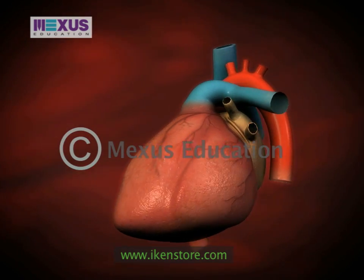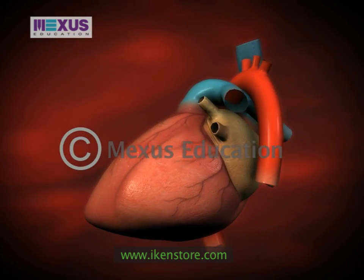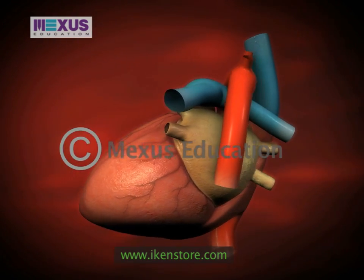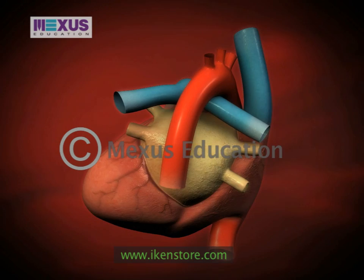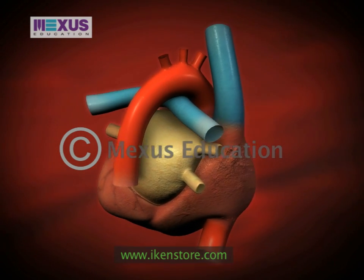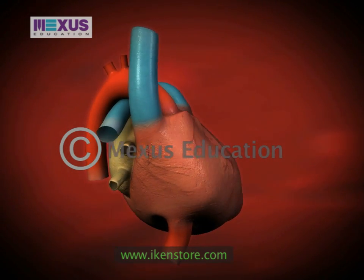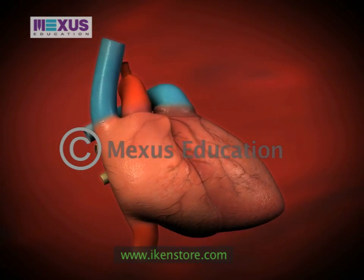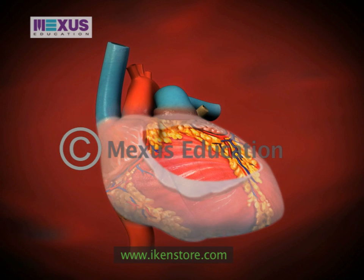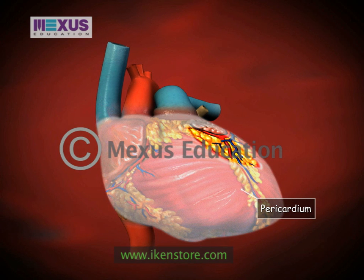The heart is a hollow muscular organ that is about the size of a fist. It is surrounded by a thin layer of tissue called the pericardium, or heart sac.